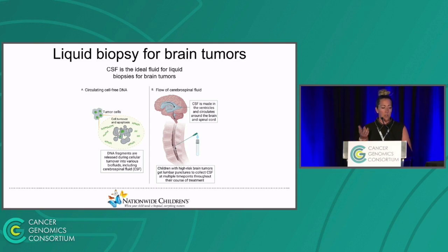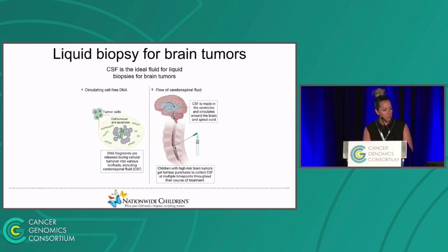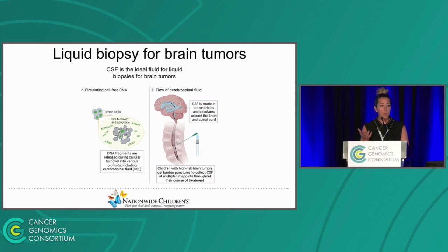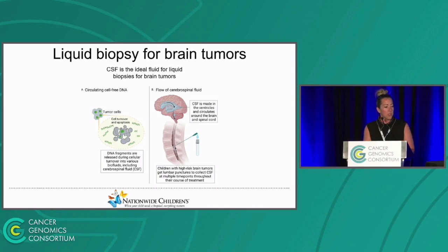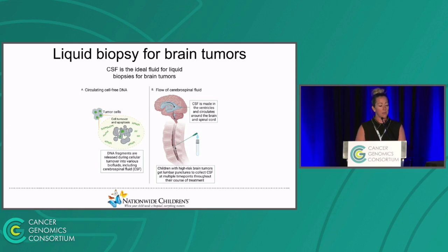It's a known biological phenomenon that cells, when they turn over and die, release DNA fragments into surrounding biofluids. These assays have potential to detect minimal residual disease with much greater sensitivity than conventional methods. For patients with brain tumors, these conventional methods include MRI and cytological analysis of CSF.